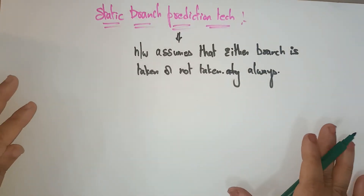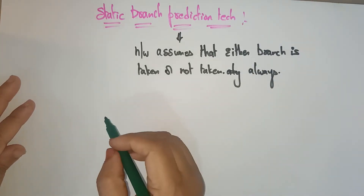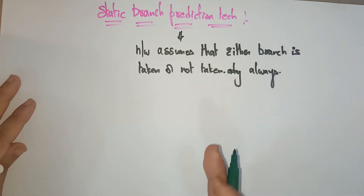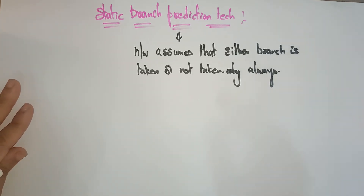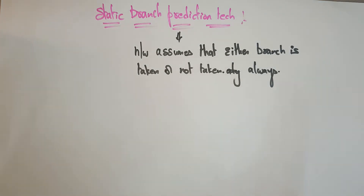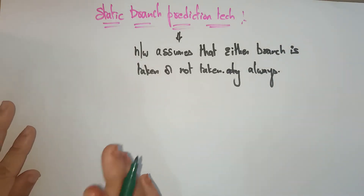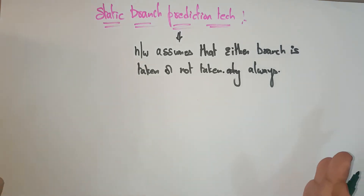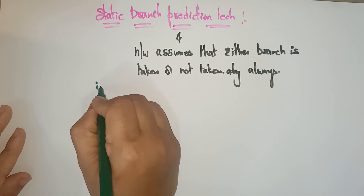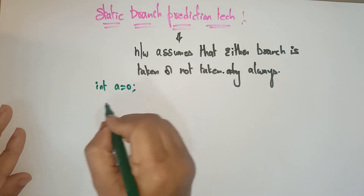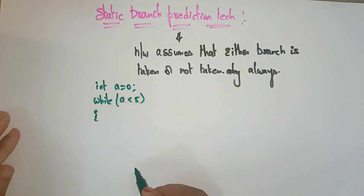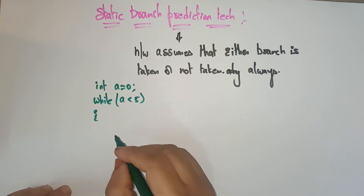Let me explain with an example, then you will get clarity. The same example I will take for both static as well as the dynamic prediction technique, so you can see the difference between them. So let me write a small program: int a = 0, while a less than 5.